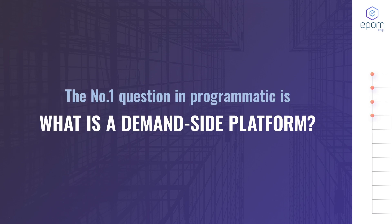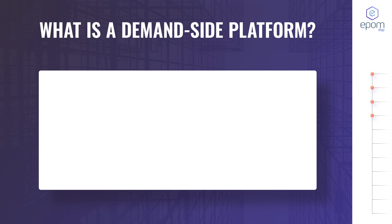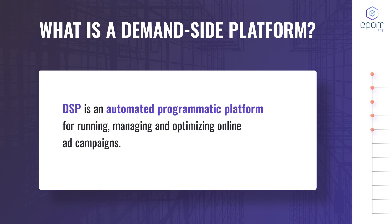They start exploring DSPs — and more questions, this time about DSPs, come up. So what exactly is a demand-side platform? The demand-side platform, or DSP, is an automated programmatic platform where media buyers set up, manage, optimize, and run online ad campaigns. The DSP is a technology that allows you to buy ad impressions in real time. Along with other marketing channels like social media, a DSP is an option to enlarge your presence on the internet.